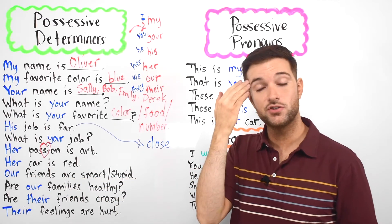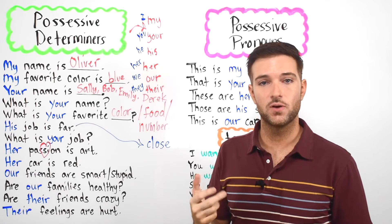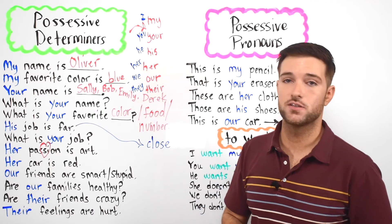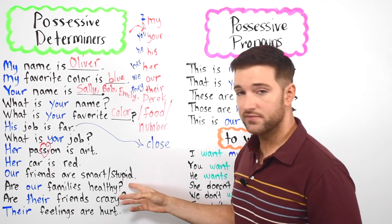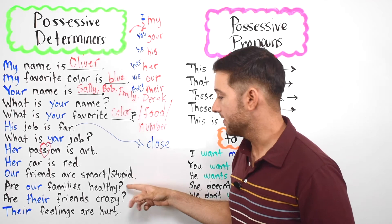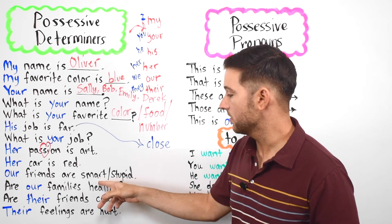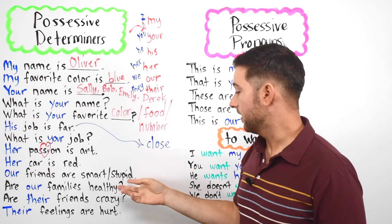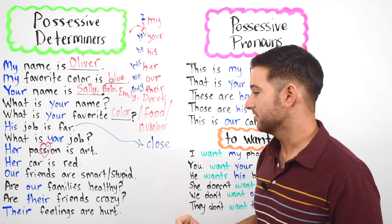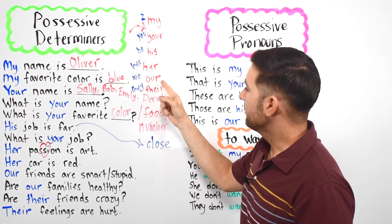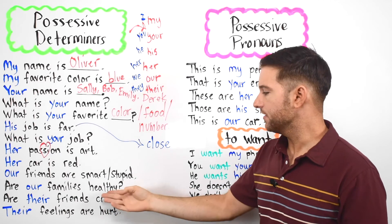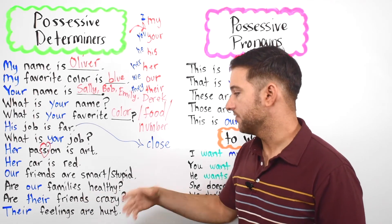Now let's move on to 'our'. Our friends are smart — smart means you have intelligence. For example, a doctor is smart, an astronaut is smart. The opposite of smart is stupid. Smart means you have a really good brain, and stupid means maybe you don't. So: our friends are smart, or our friends are stupid.